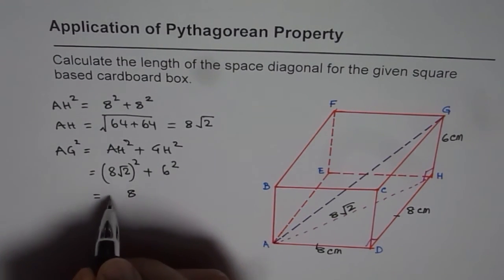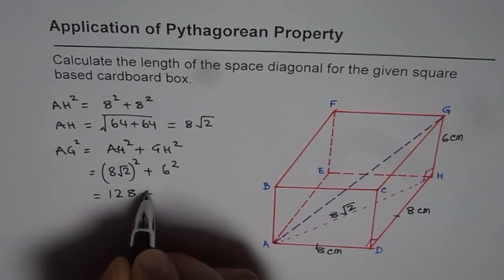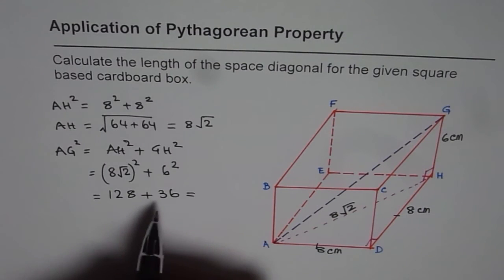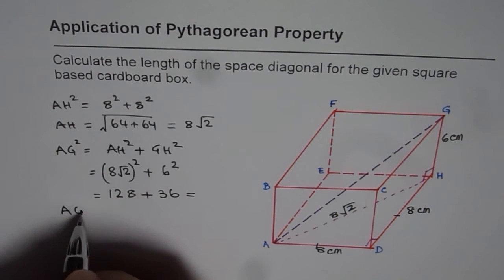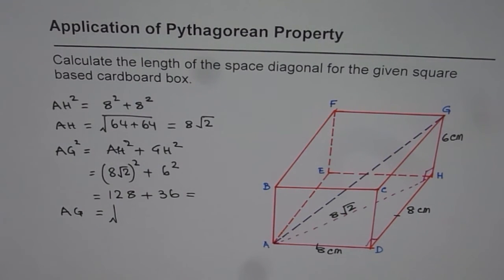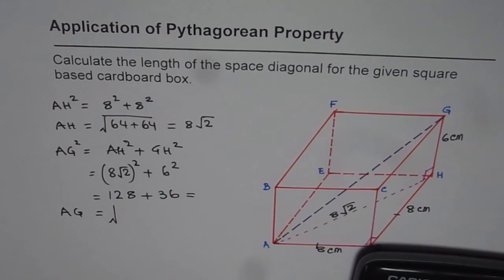Which is 128 plus 36. You can always use calculator and then calculate AG from here. So AG is equal to square root of this number.